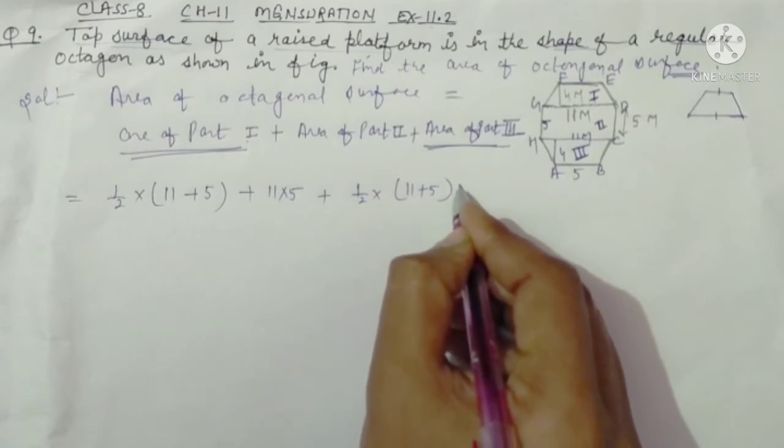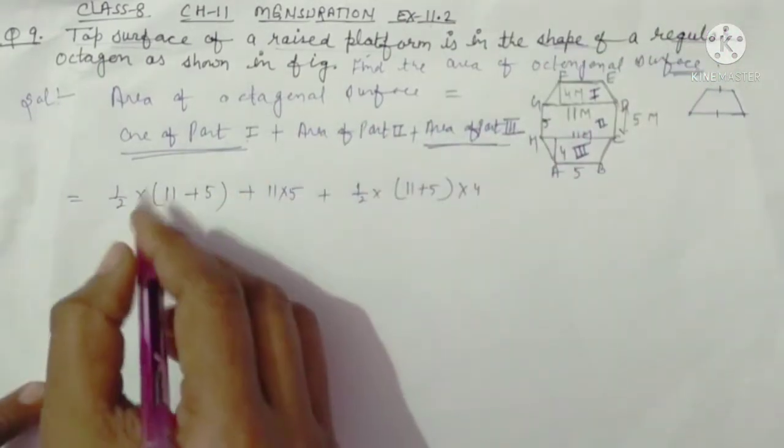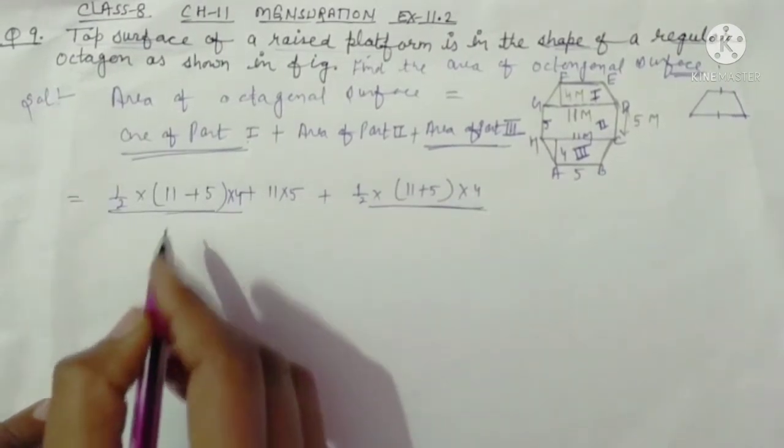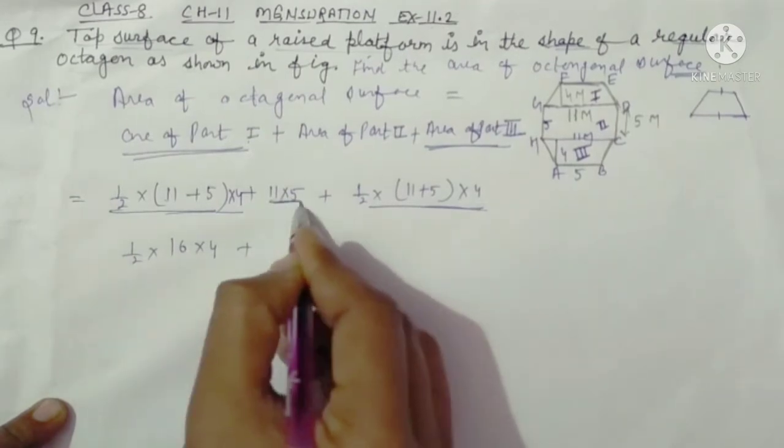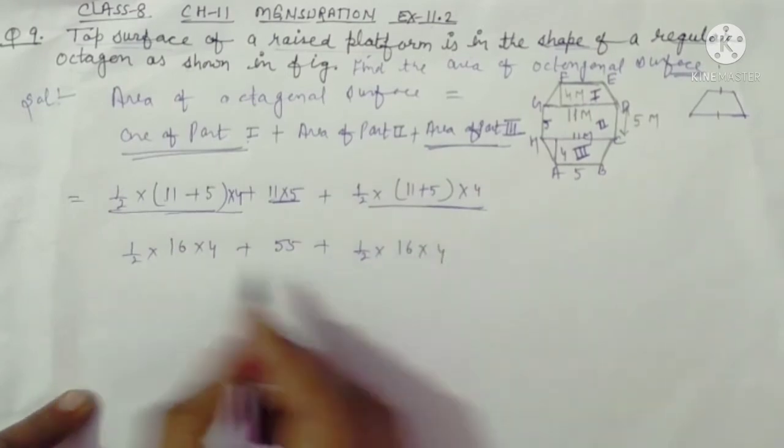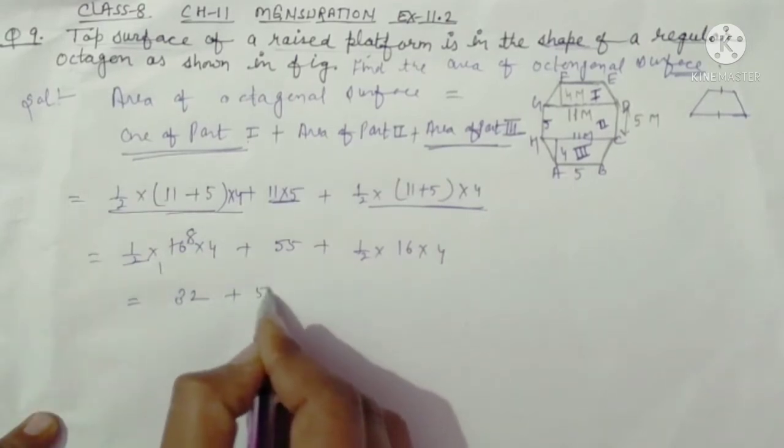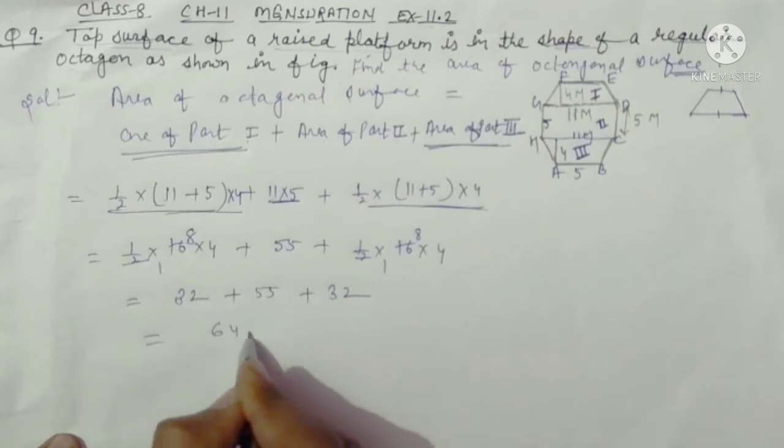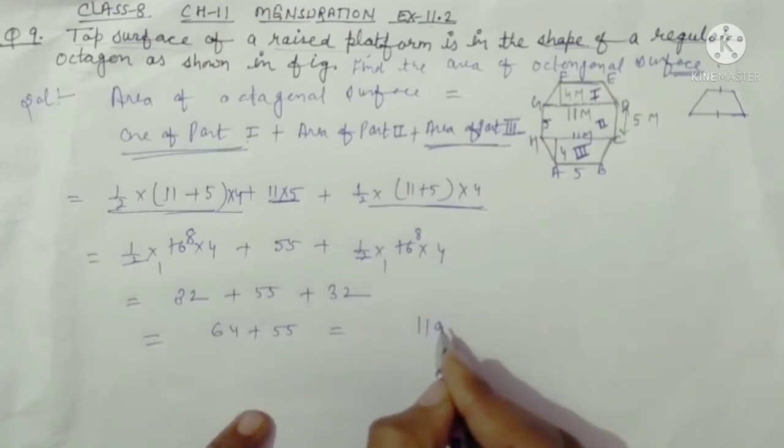And multiply by h 4, and here h is distance between them which is 4. This is the same. Now 1 by 2 multiply by 4 and 5 and 15, plus 1 by 2 into 16 multiply by 4, 8 and 4 multiply. How? 32 plus 55 plus 2 add 32. And how? 55 add 5 and 4, 9 and 6 and 5. How will 119 square?